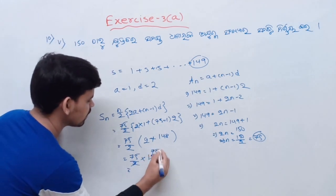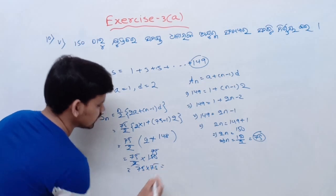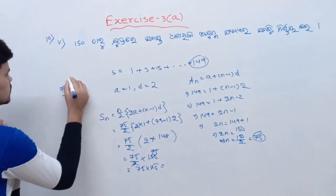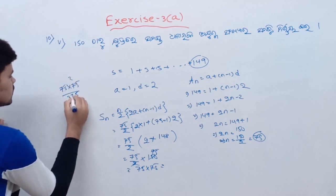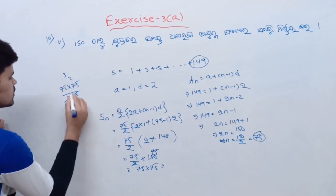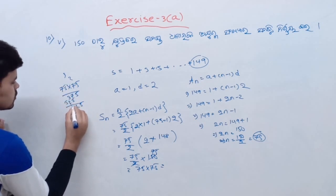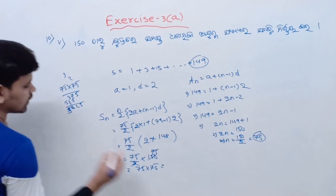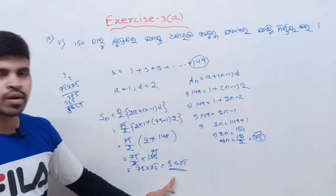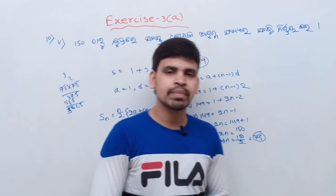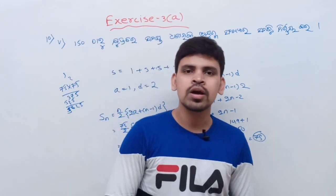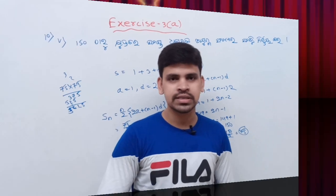So cancel 2. 75 into 75. 75 into 75 equals 5625. So the answer is 5625.